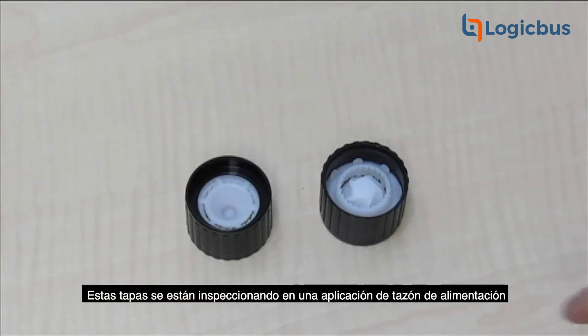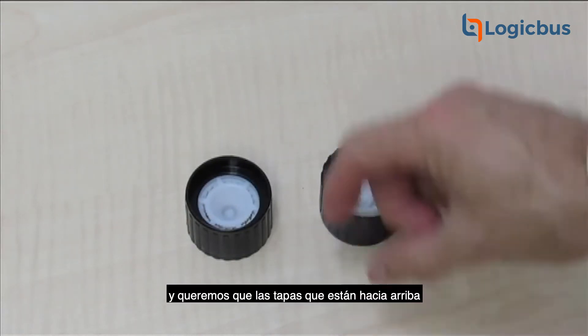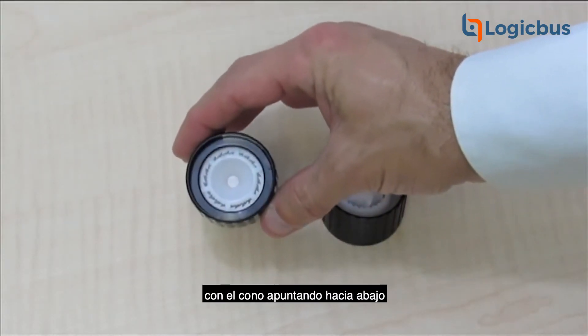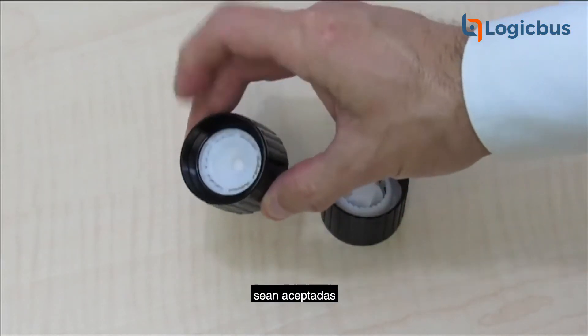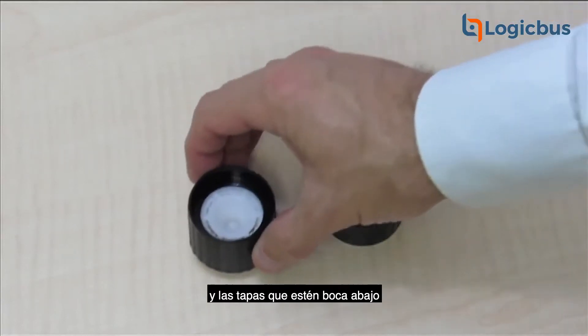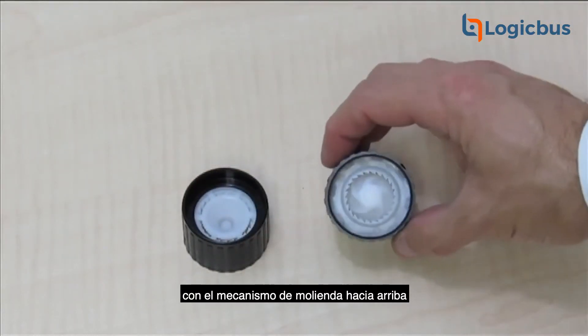These caps are being inspected in a feeder bowl application and we want caps that are right side up with the cone pointing down to be accepted and caps that are upside down with the grinder mechanism facing up to be rejected.